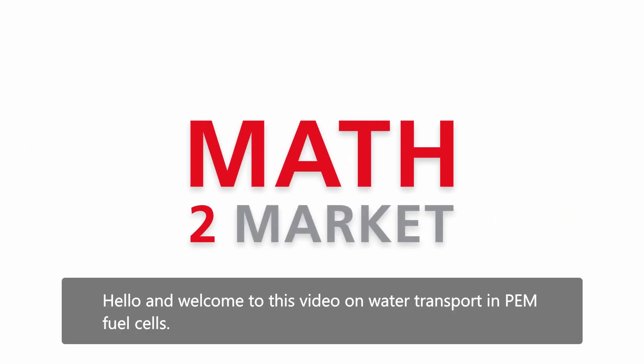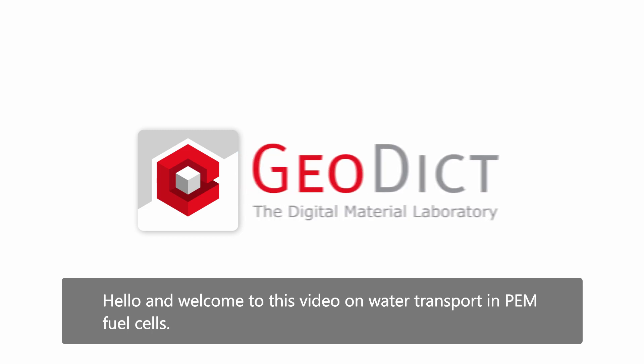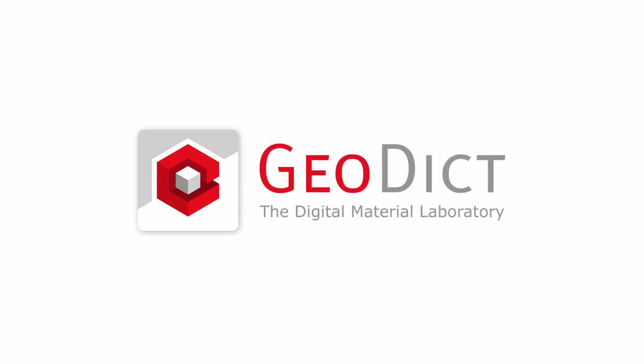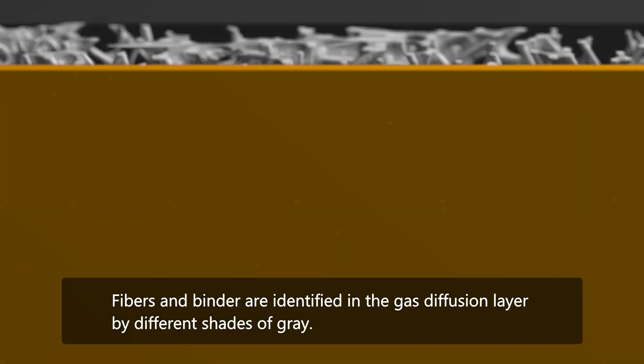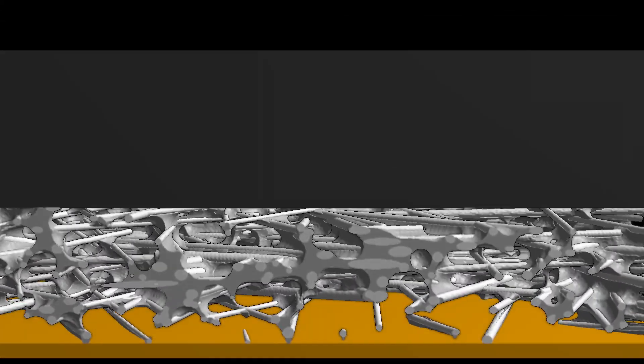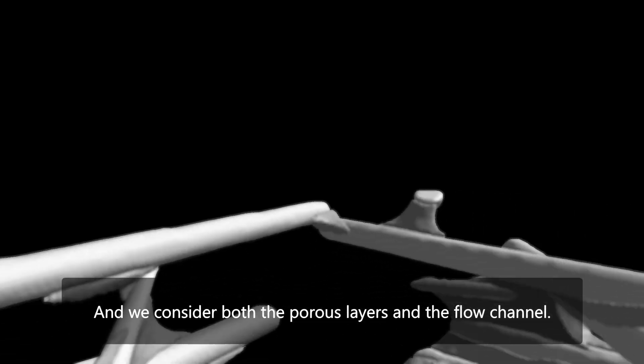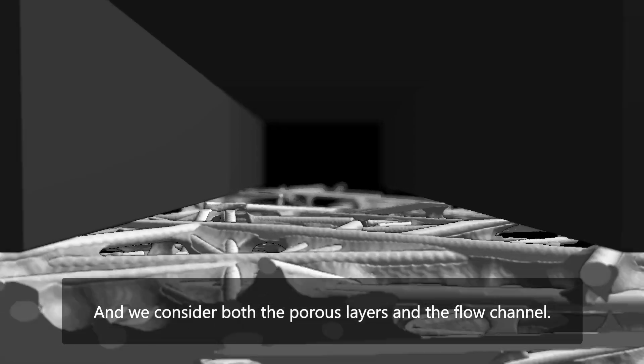Hello and welcome to this video on water transport in PEM fuel cells. Fibers and binder are identified in the gas diffusion layer by different shades of gray, and we consider both the porous layers and the flow channel.